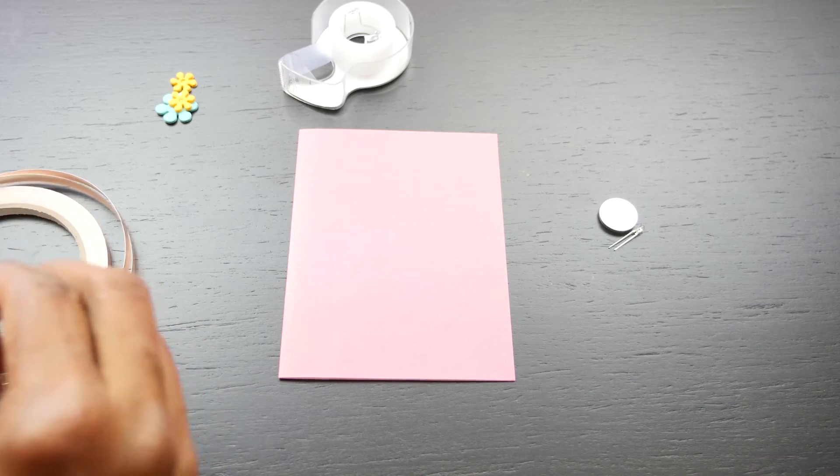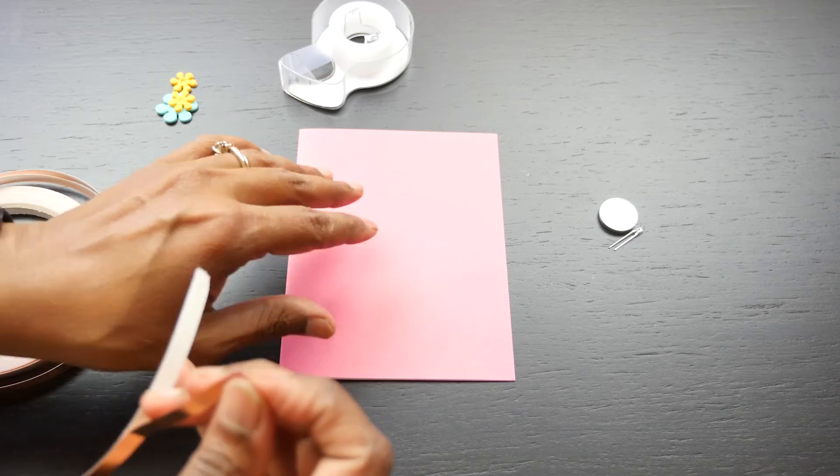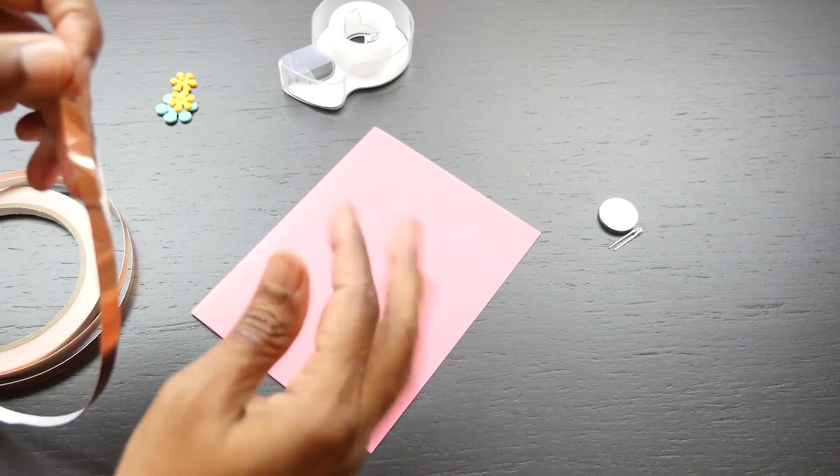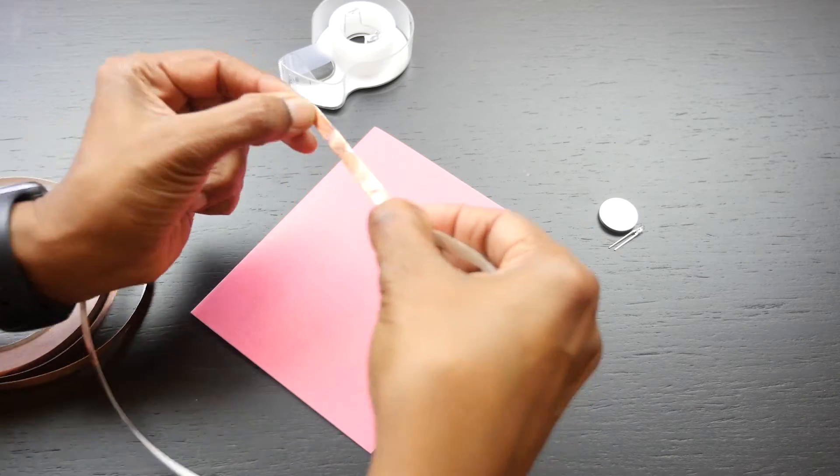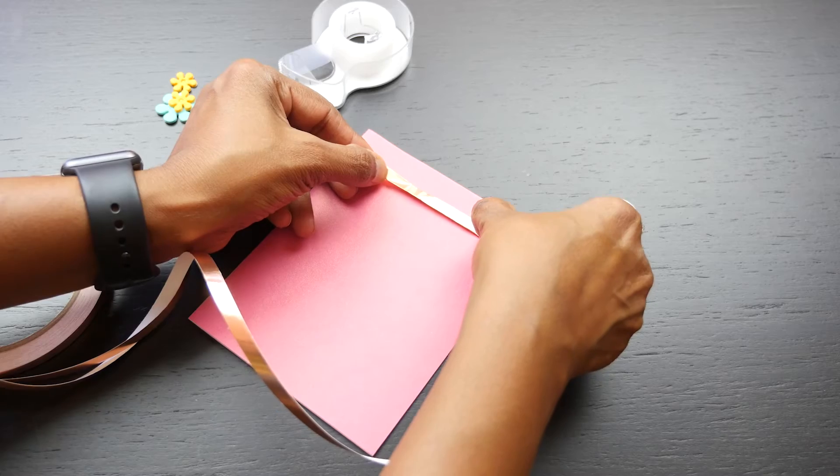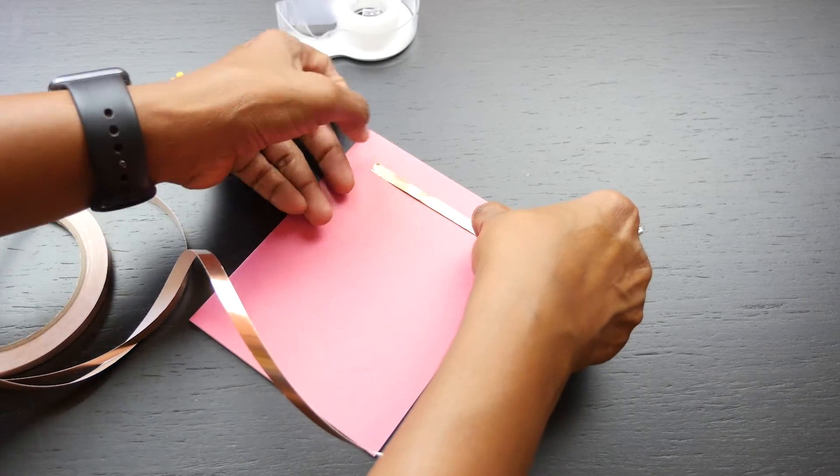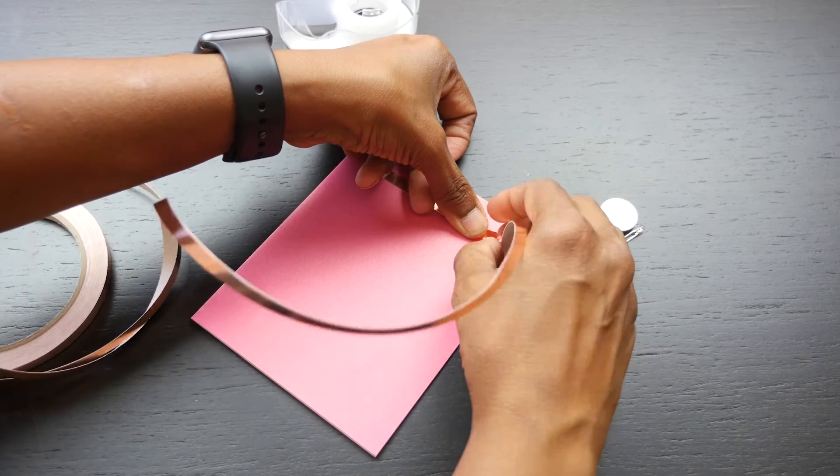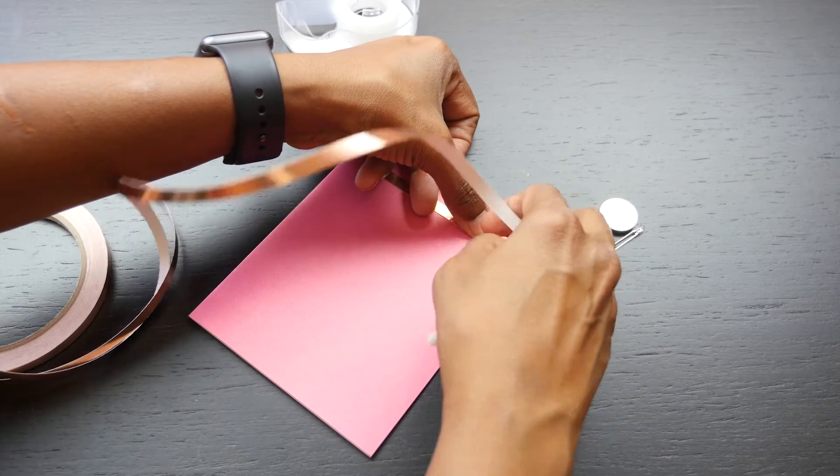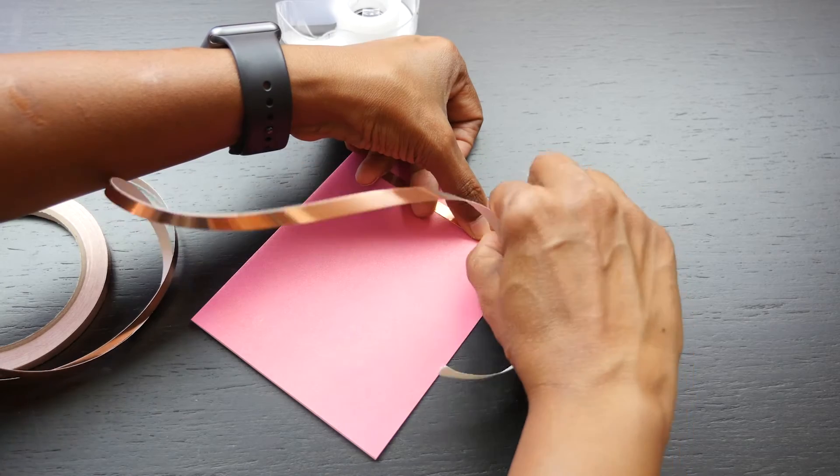The first thing we do is to make two different parts, one for positive and one for negative. Since I'm going to make a really simple one, I'm going to make use of straight lines. Once you feel comfortable, you can make designs with the copper tape so it actually becomes part of the design rather than just making a circuit.